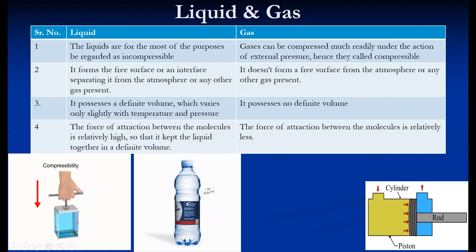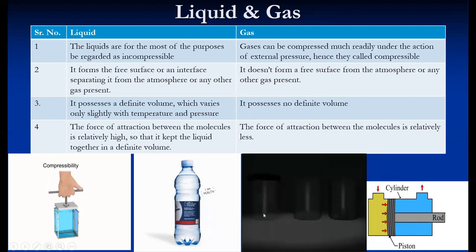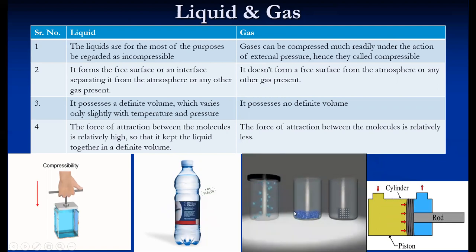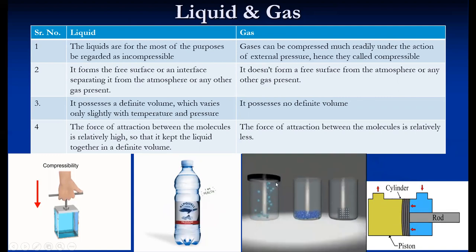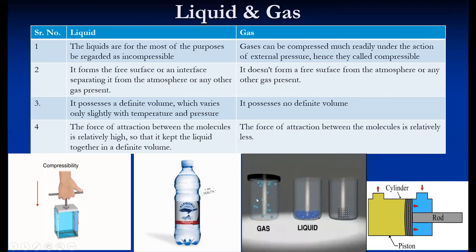If we pour gas into a bottle, it occupies the entire space and does not form any free surface. Liquid occupies a definite volume which varies slightly with temperature and pressure, but there is no definite volume for gases — they take the entire volume of the containing vessel. The forces of attraction in liquid are relatively high, keeping the liquid together in a definite volume, whereas the forces of attraction between gas molecules are relatively less, so they spread over the entire container.